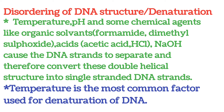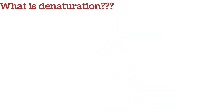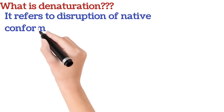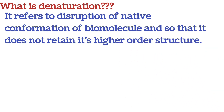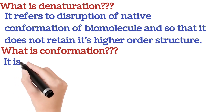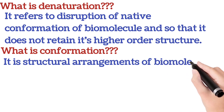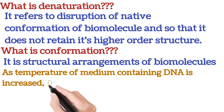Denaturation in biology refers to the disruption of the real, native, and original conformation of a biomolecule, so that after denaturation the biomolecule no longer retains its original higher-order structure. Conformation in biology refers to the specific structural arrangement of a biomolecule. When the temperature of the medium is increased slowly, DNA starts to lose its conformation.